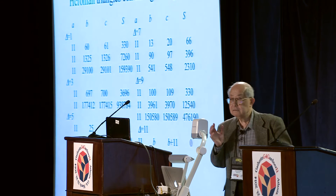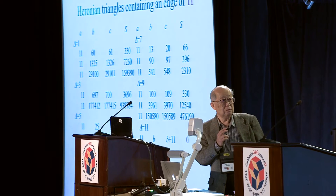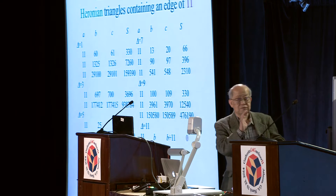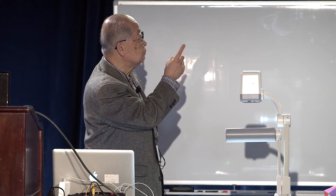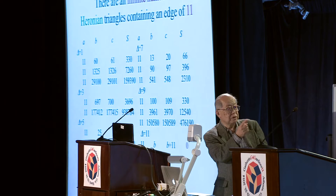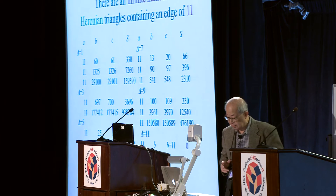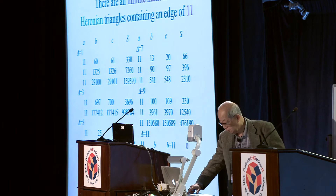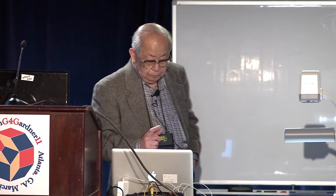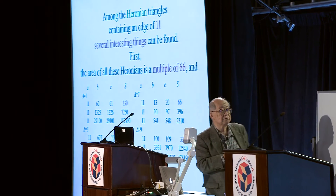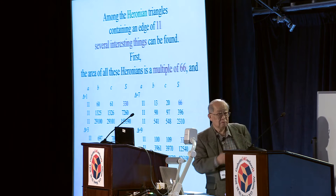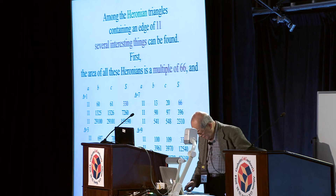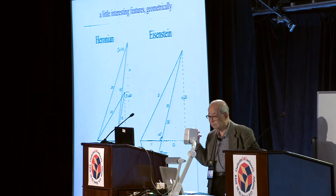There are infinitely many Heronian triangles, and they are grouped into five categories according to the difference delta between two edges B and C. So delta equals 4, 1, then delta equals 3, 5, 7, 9. You can see the next: the whole area of Heronian triangles containing an edge of 11 is a multiple of 66. But it is not so interesting because you can easily prove these properties.